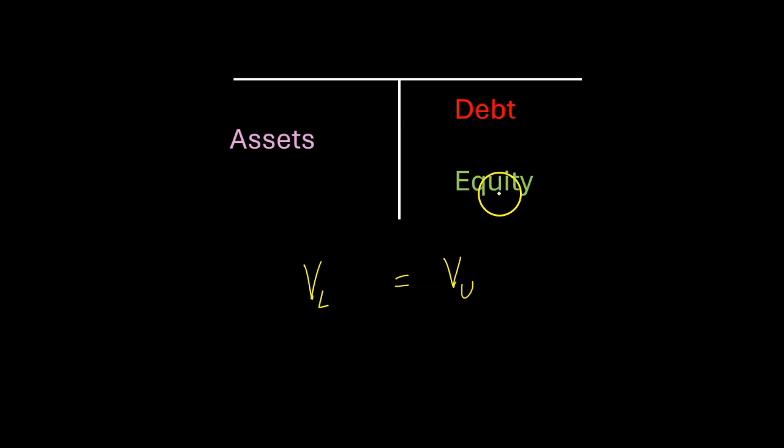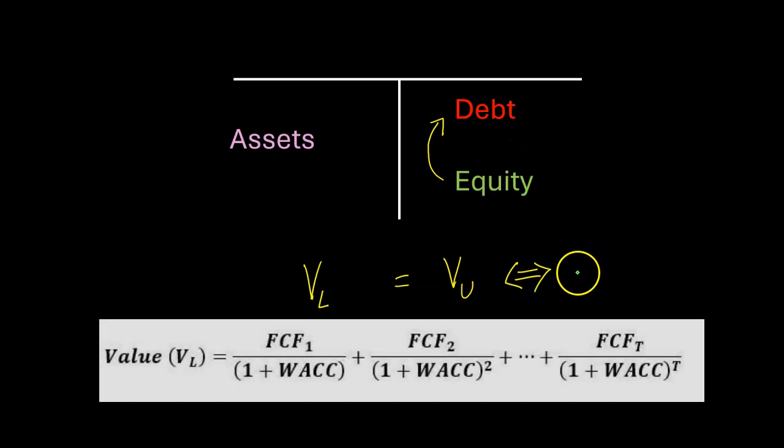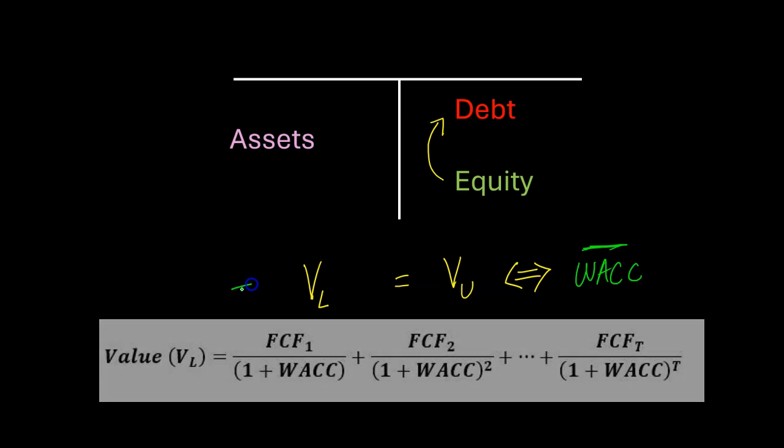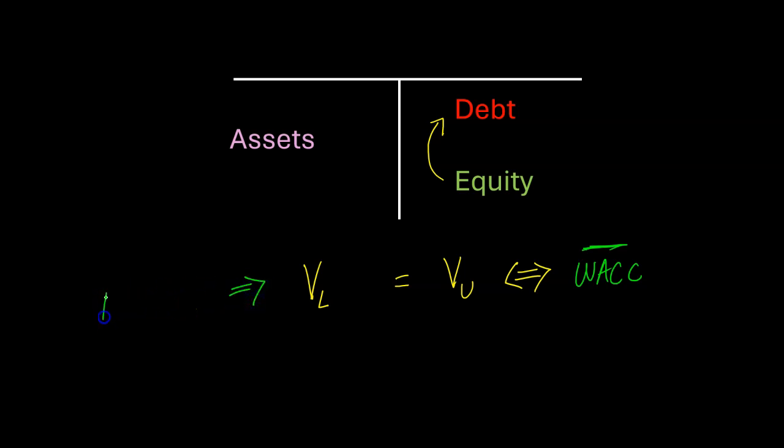Even if you go from 100% equity to say maybe 30%, 40% debt and 60% equity, now you're going to be a levered firm. Nonetheless, the value that you are going to have is going to be the same. This is the same thing as saying that as you change capital structure, weighted average cost of capital remains the same. And so this proposition, this statement, this is commonly referred to as Modigliani and Miller proposition number one or MM1.